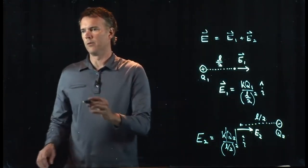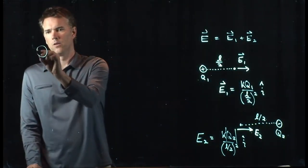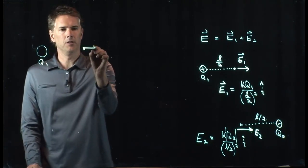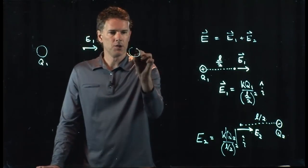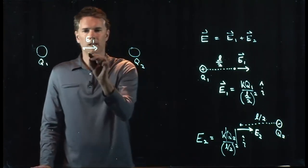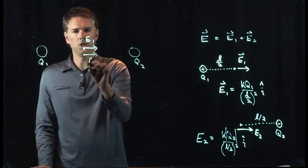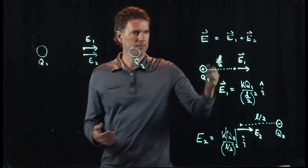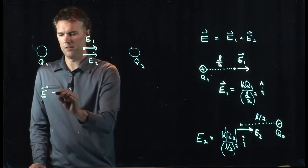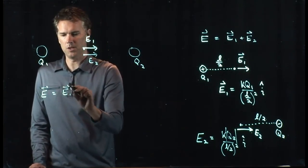So here we go. We've got charge Q1 gives us a field E1. We've got charge Q2 gives us a field E2. They're in the same direction, so we want to add them up. E is just E1 plus E2.